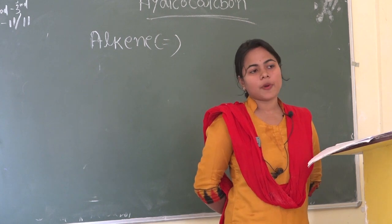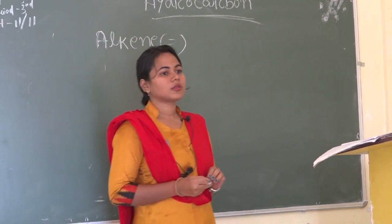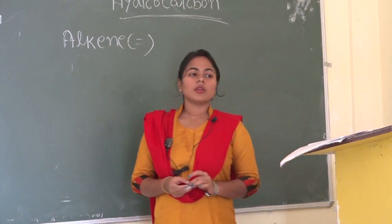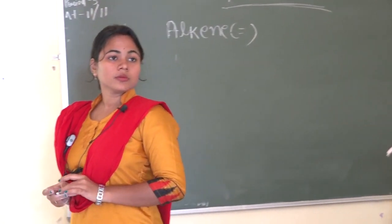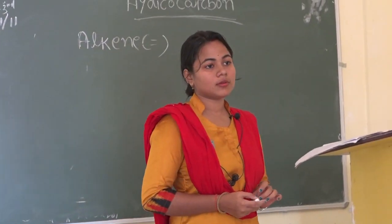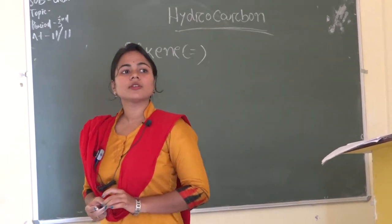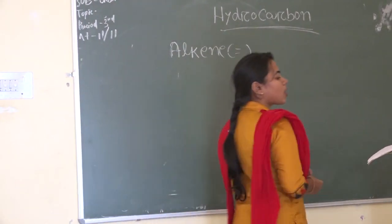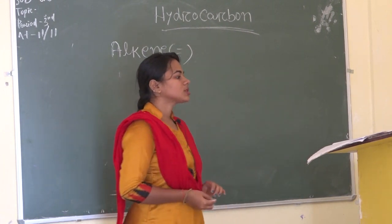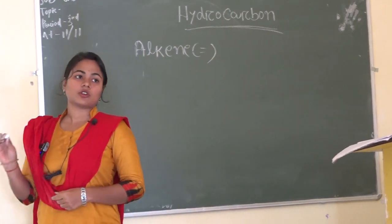Write the heading: cyclic compound. There are three types of chain: straight chain, cyclic chain, and branch chain. Cyclic compound — a circle-type structure is the cyclic structure, and cyclic structure is also called closed structure.